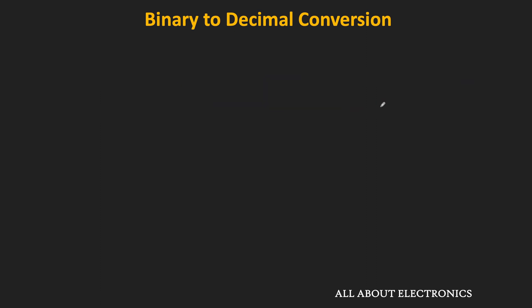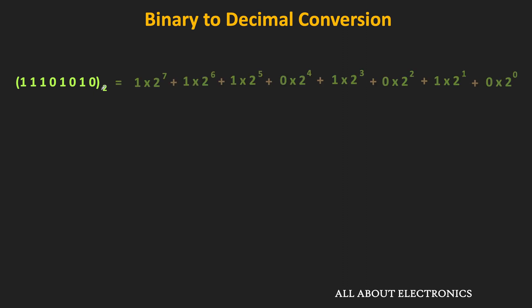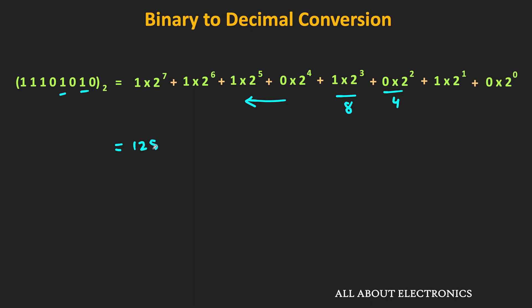Let's take one more example with an 8-bit number. The least significant bit is 0, multiplied by 1. Moving left, the next bit is 1, multiplied by 2. Then 0 multiplied by 4, then 1 multiplied by 8. As we continue moving left, each bit's weight increases by a factor of 2. The decimal equivalent is the summation of all products: 128 + 64 + 32 + 0 + 8 + 0 + 2 + 0 = 234.